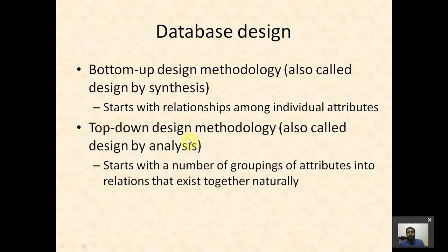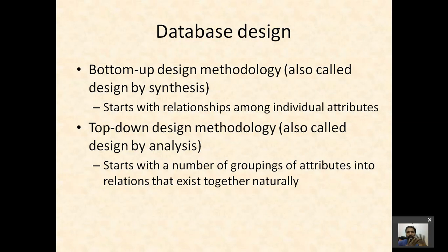What we follow is the top-down design methodology, also called design by analysis. It starts with a number of groupings of attributes into relations that exist together naturally. This is what we have done in the previous module — we designed ER diagrams and mapped them into relations, giving us some basic tables. From these we will find out whether they are good relations and apply the techniques learned in this module to convert them into good relations.